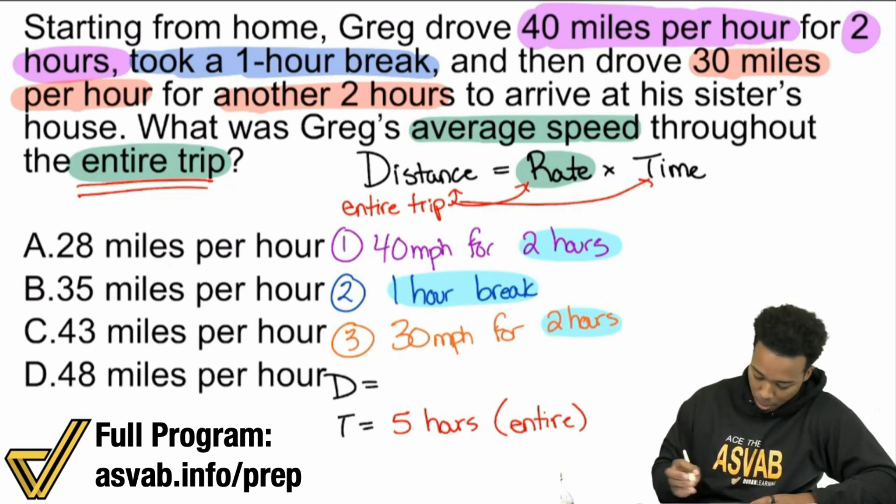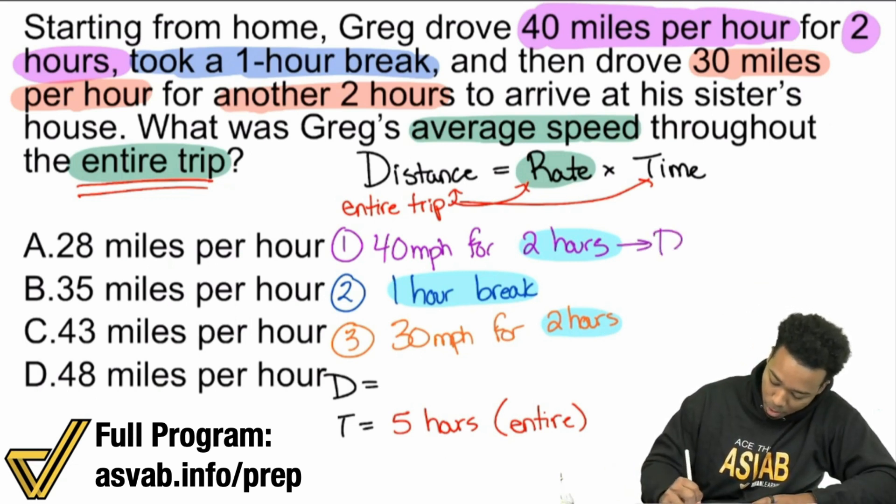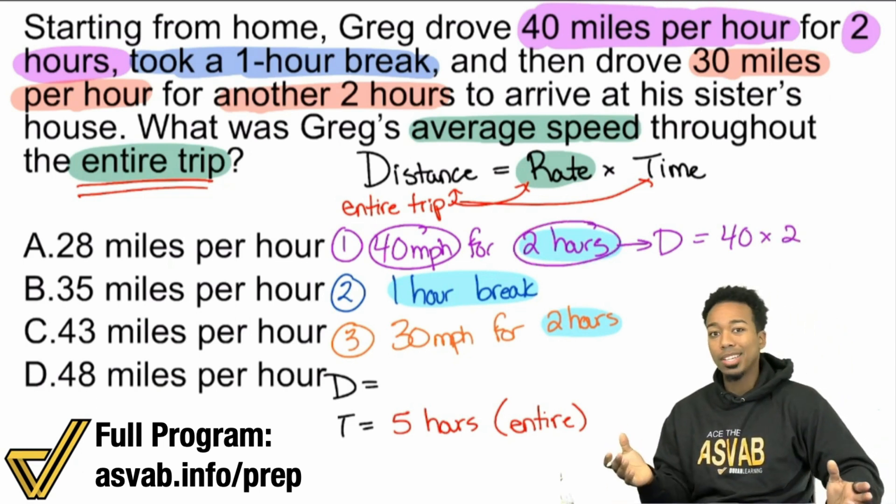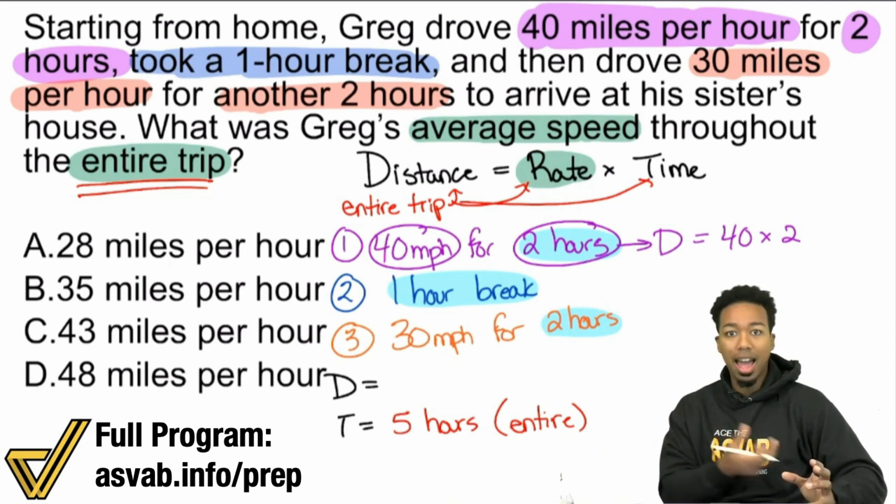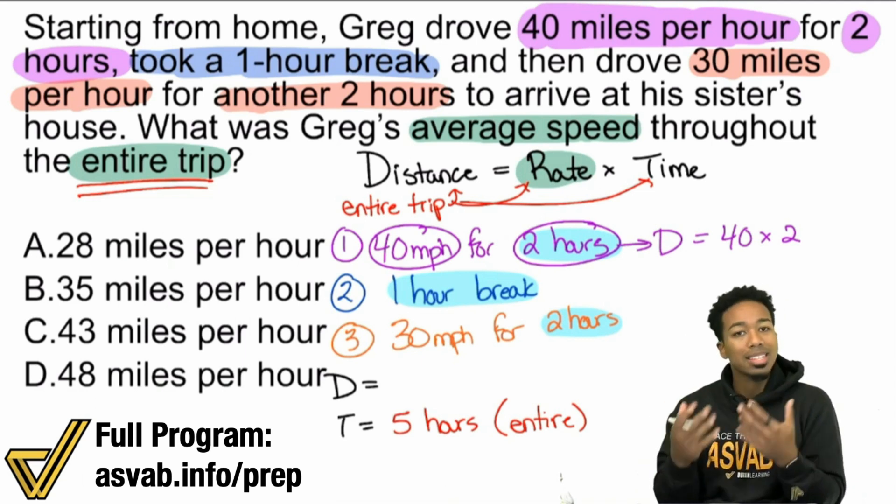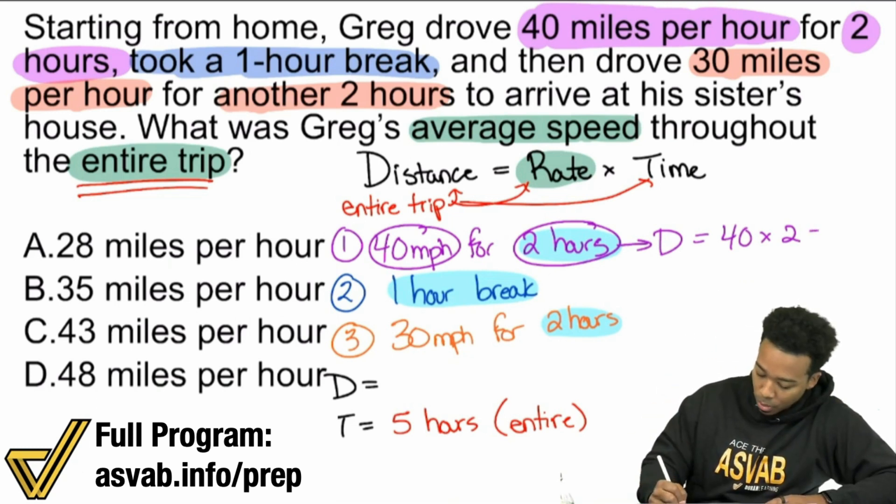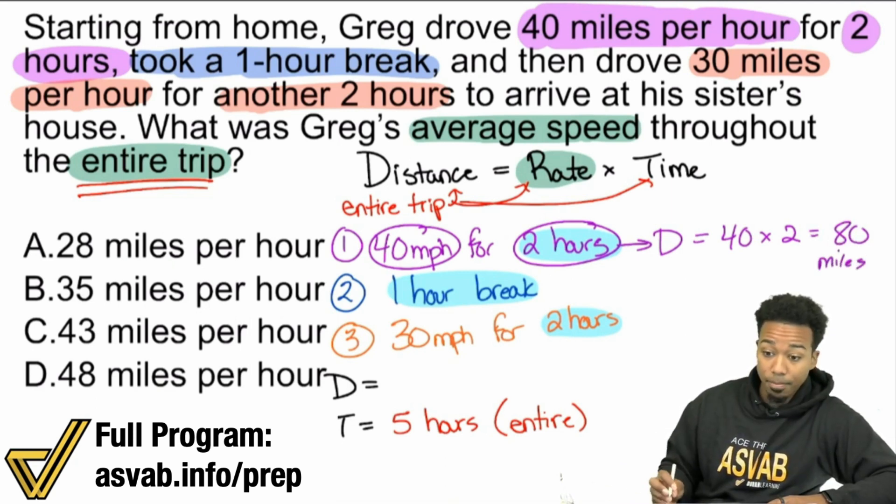For this first part here in purple, the distance for that first part is going to be rate 40 MPH times time, two hours. Remember that the word per, the miles per hour, that gives it away. Mixing the distance and time together, so a speed, that gives away your rate. The word per gives it away. The phrase for every also gives it away. 40 times two, that gives us 80 total miles.